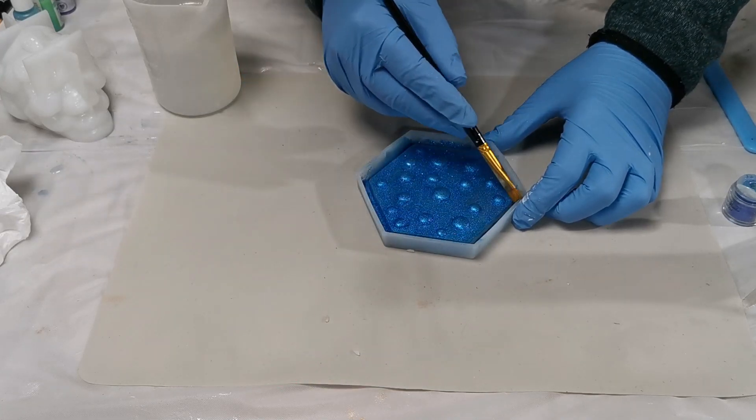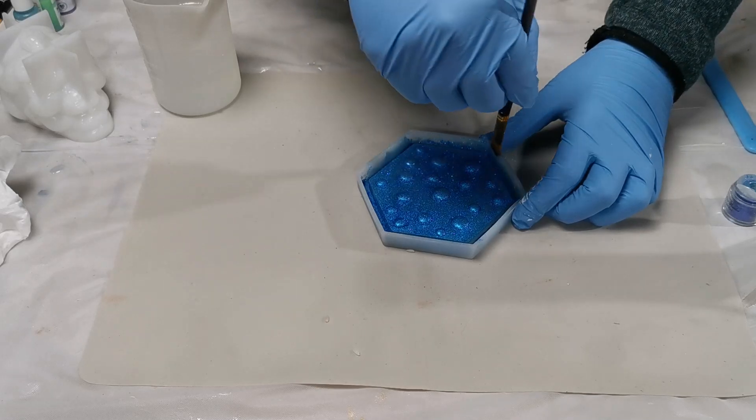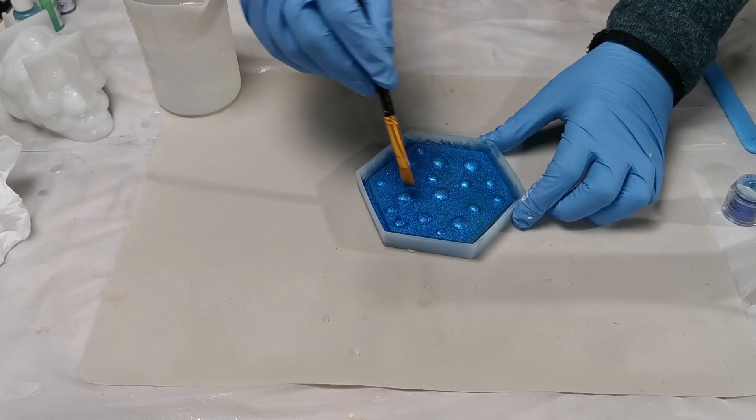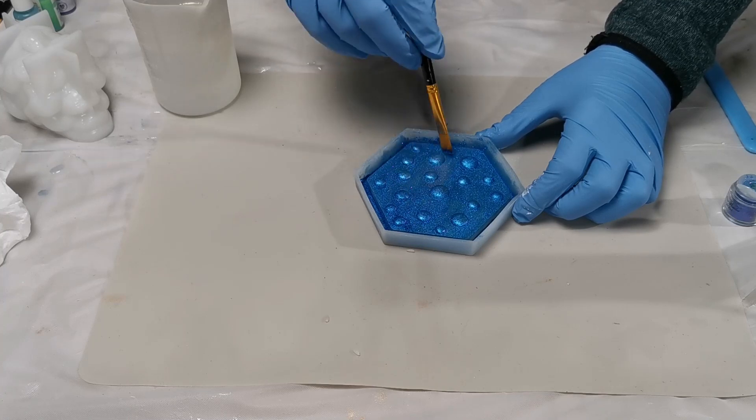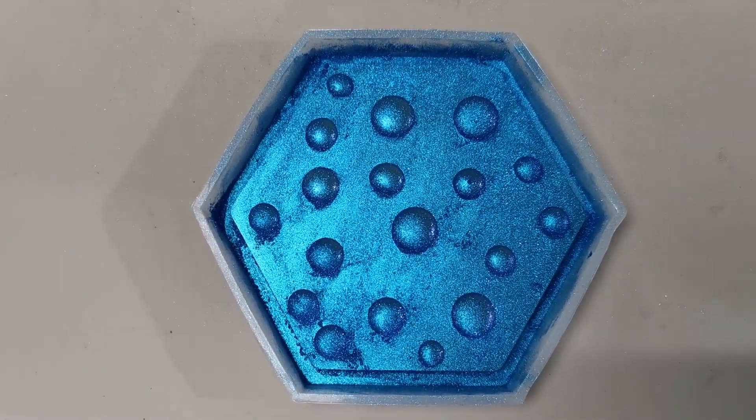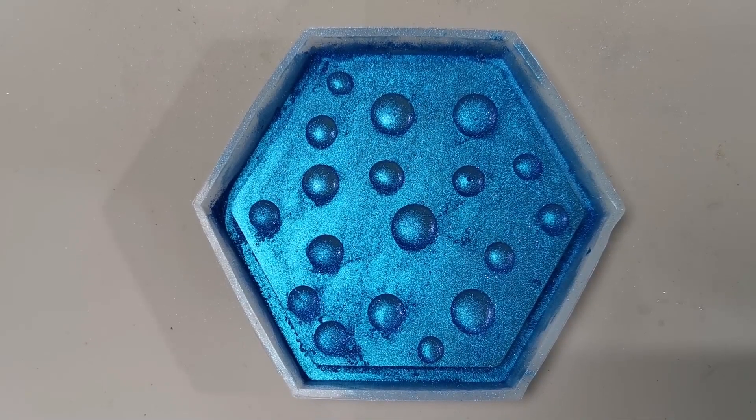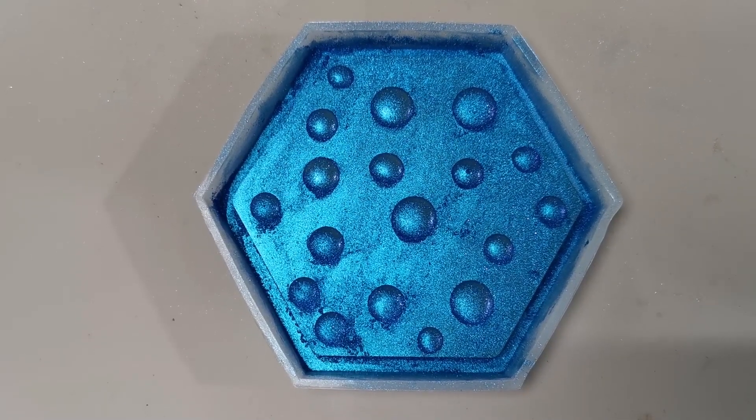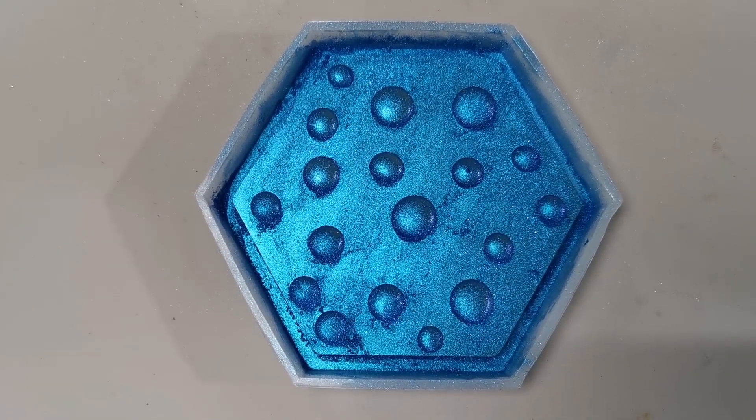Before I got into creating with resin, I had no idea there were things such as mica powder. It's kind of like fairy dust for resin artists, and it's just so beautiful—I love using it. Finished that step, our droplets have had a shimmering makeover with that mica powder, and now we're ready for the next stage, which is applying the resin.